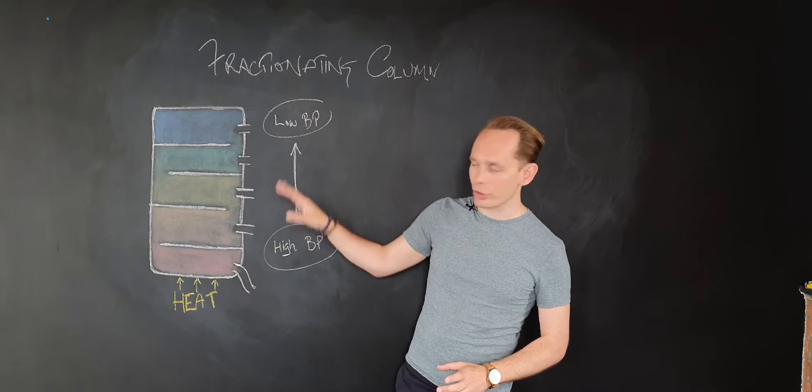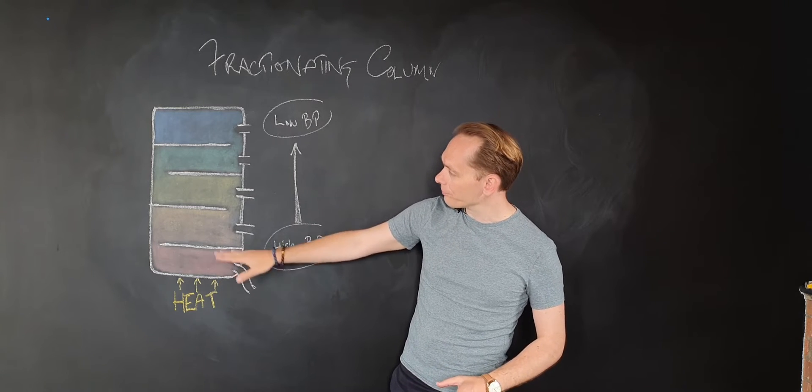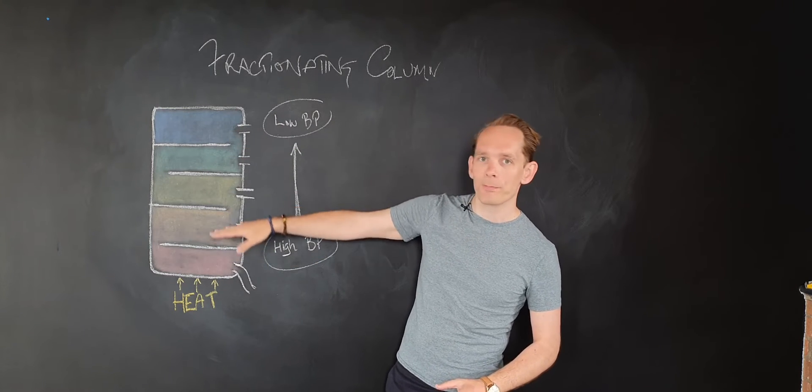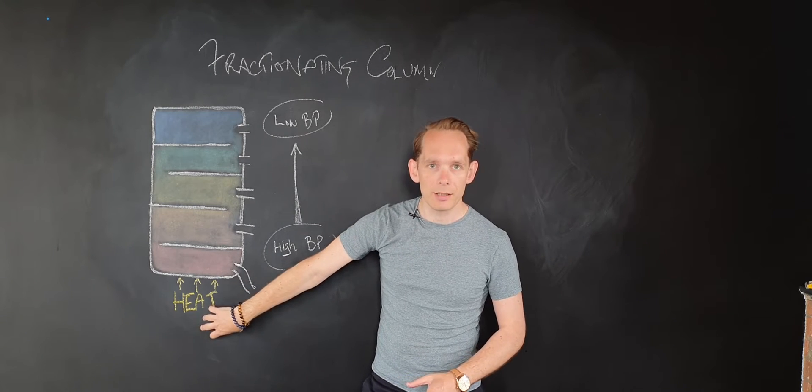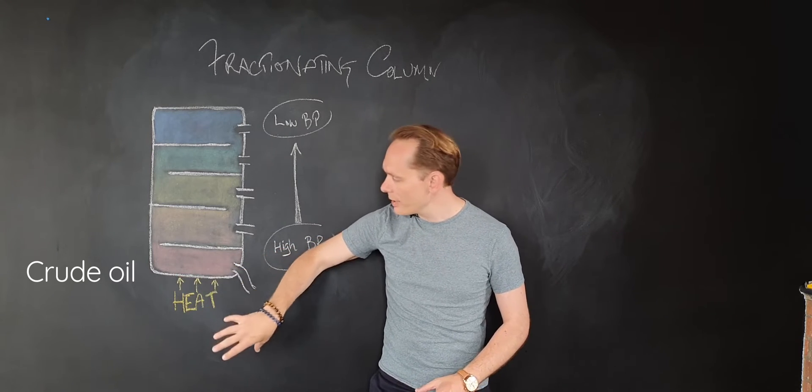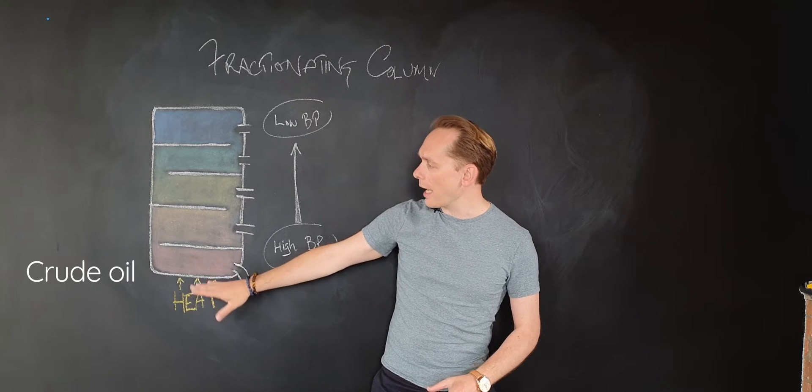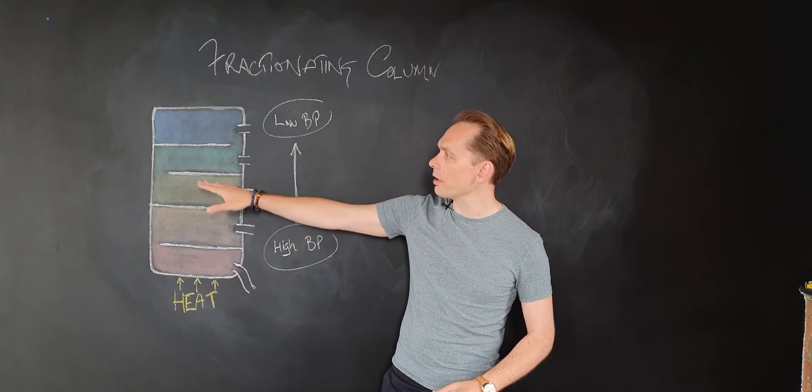You take this great big series of chambers, so it's a big tank with some separation chambers, and you put a lot of heat at the bottom. So the crude oil is put in the bottom, you heat it a lot and the compounds will rise up through.